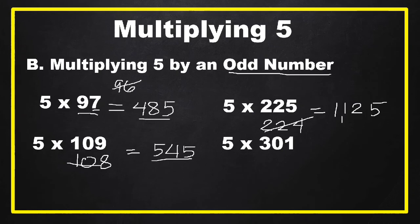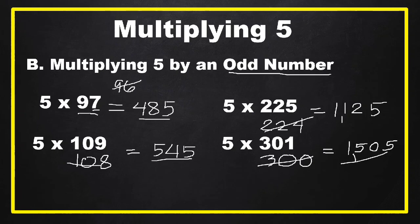Another example: five times 301. Take 301 minus 1, which equals 300. Get one half of 300, which is 150. Then write 5 at the right side, so our answer is 1,505. This is so very easy!